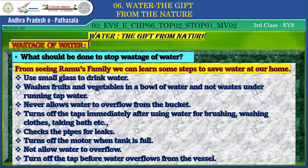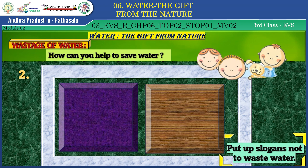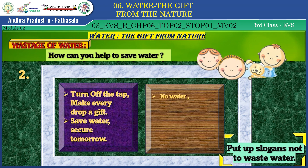Children, tell me how you can help stop wastage of water in your surroundings. Create awareness — turn off the motor after the tank fills up and turn off taps after use. Put up slogans to create awareness among neighbors and friends. For example: 'Turn off the tap, make every drop a gift.' 'Save water, secure tomorrow.' 'No water, no life.' 'Hold your grip and stop the drip.' 'Think before wasting water in the sink.' You can collect or prepare more slogans like these.